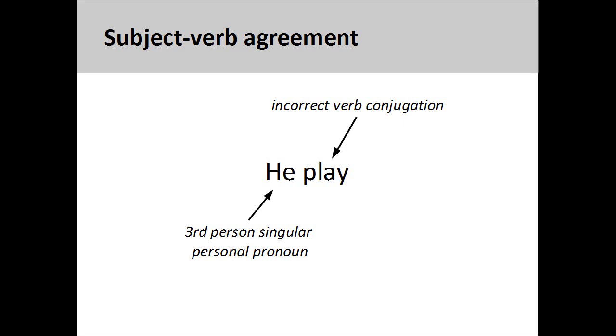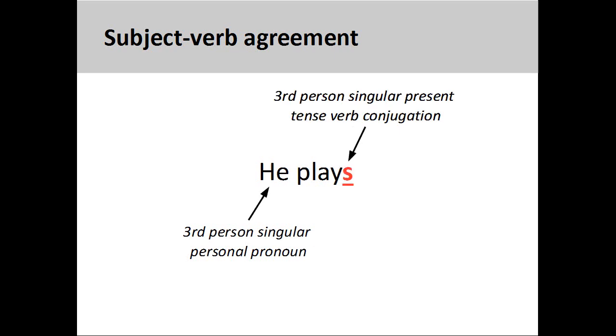In the sentence you see on the screen, the third person singular personal pronoun 'he' is paired with an incorrect verb conjugation 'play'. This makes the sentence sound awkward. English adds an 's' to the verb in order to make a third person singular verb conjugation. This agreement between the subject and the verb makes the sentence sound much better.